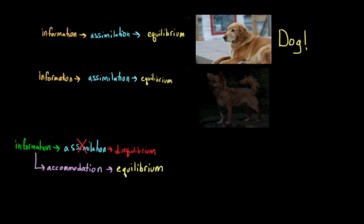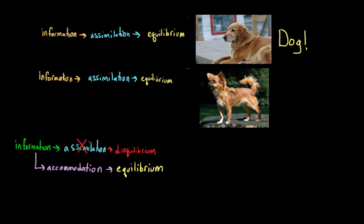And then maybe later on you come across a chihuahua. And you think, okay, well, this one looks a little bit different, but it still has many of the features that I have come to use to define dog. And so, hey, this one is also a dog. So you assimilate this information and you return to equilibrium.